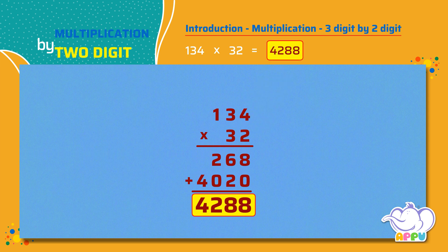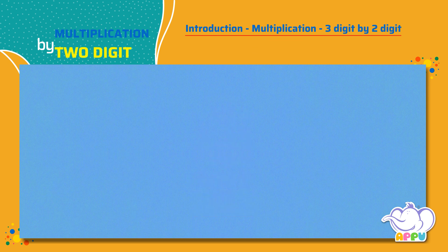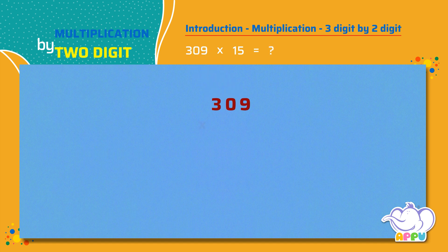Let's see another example. Let's multiply 309 times 15. Let's write 309 and use the multiplication symbol and write the number 15.